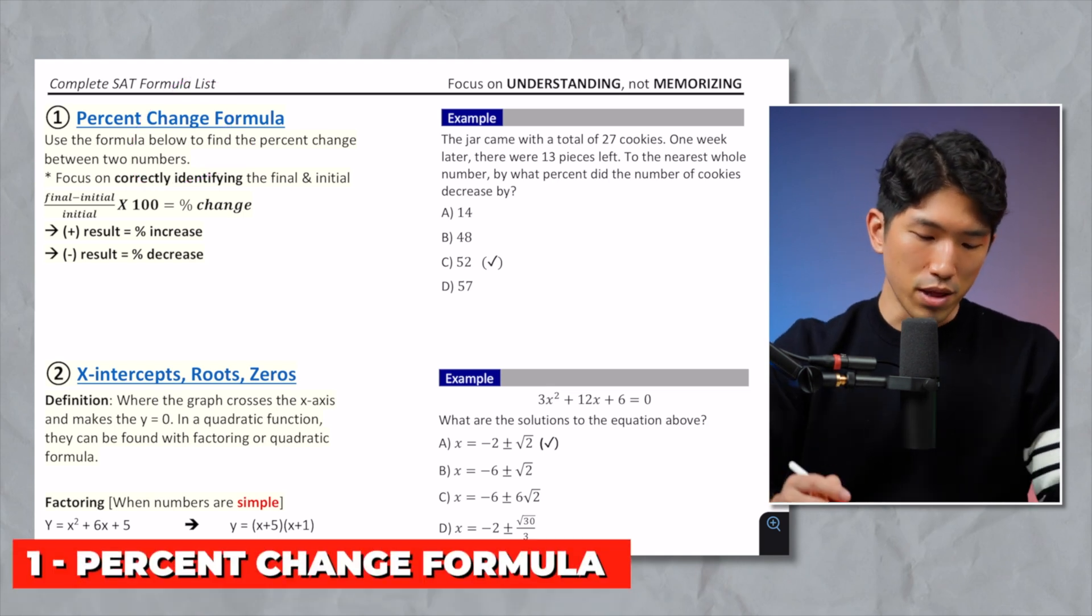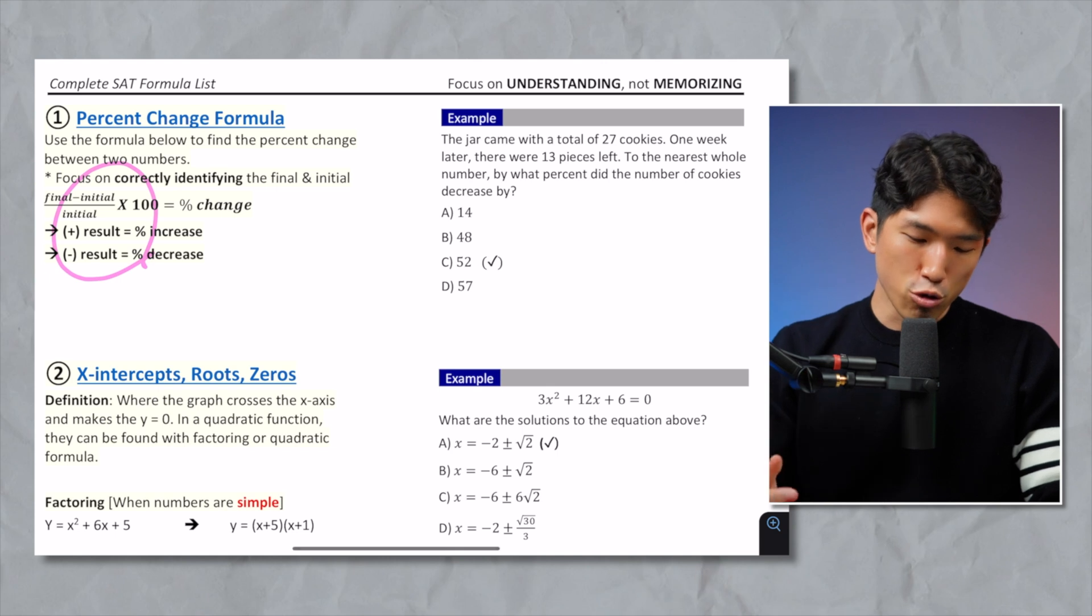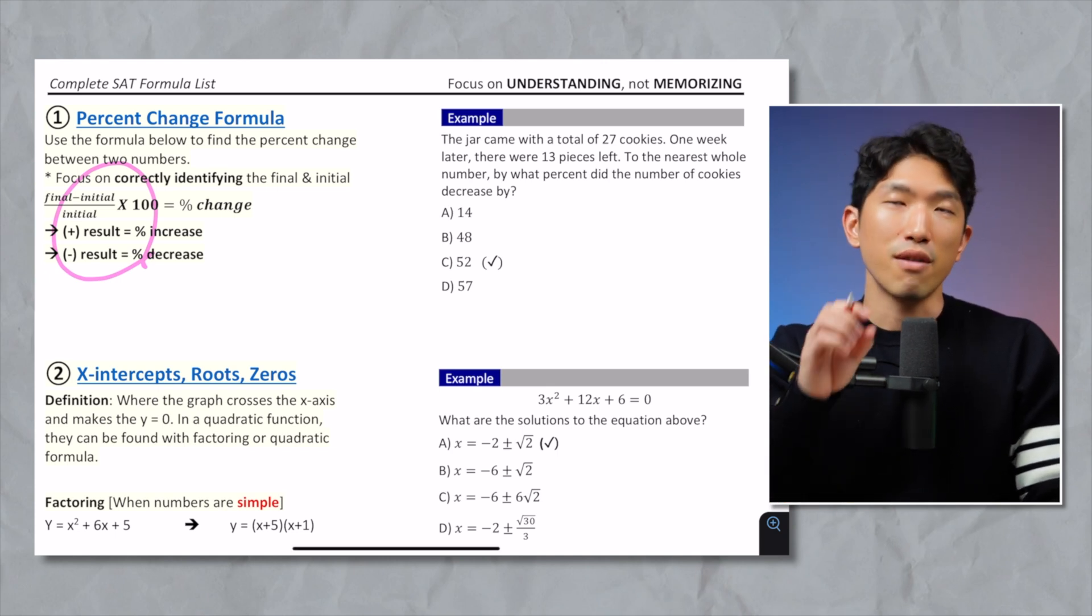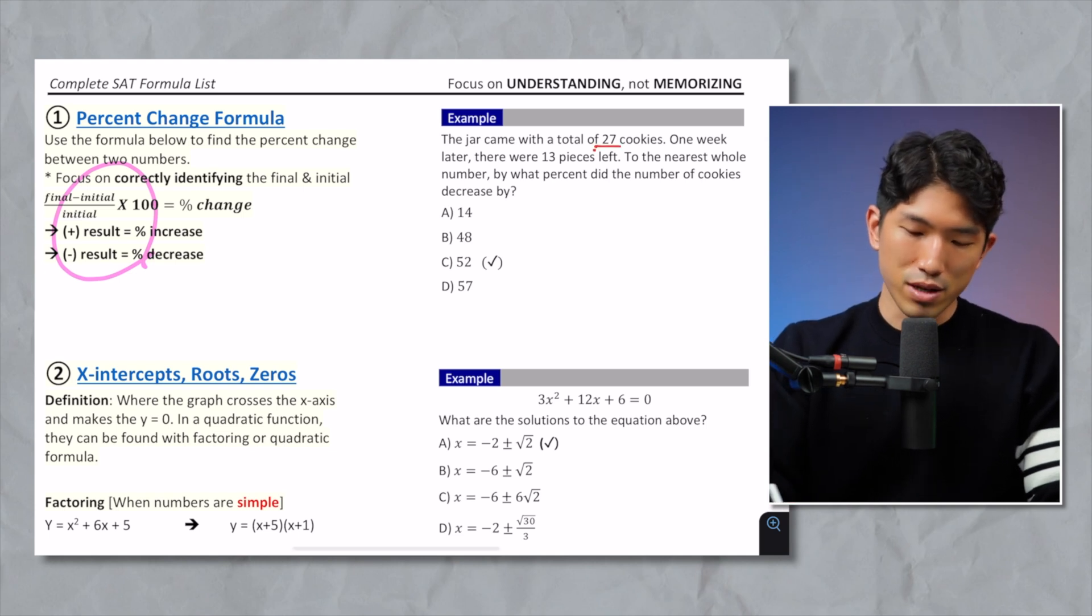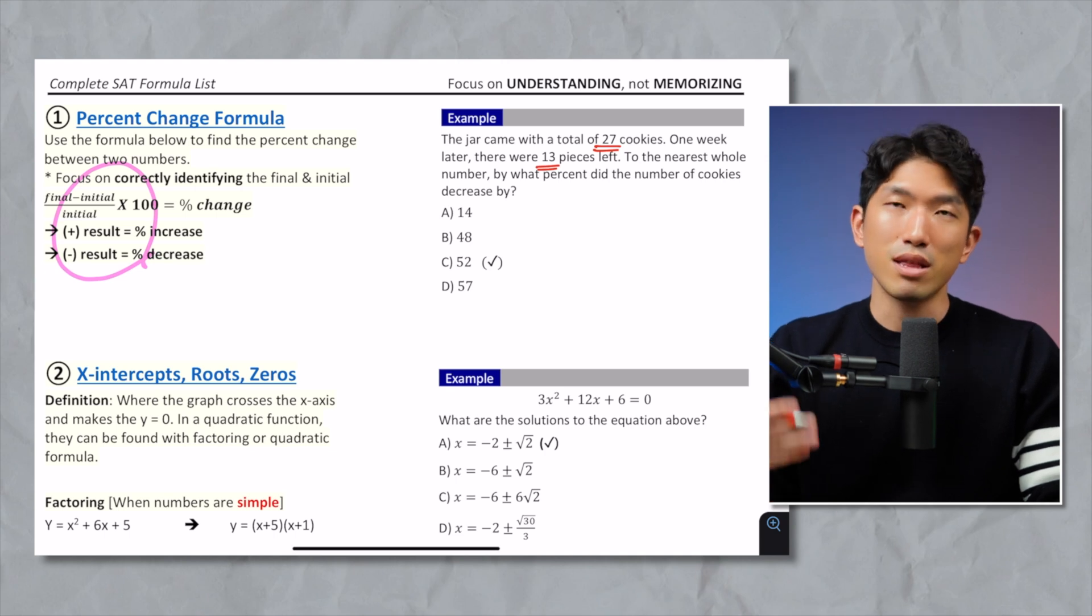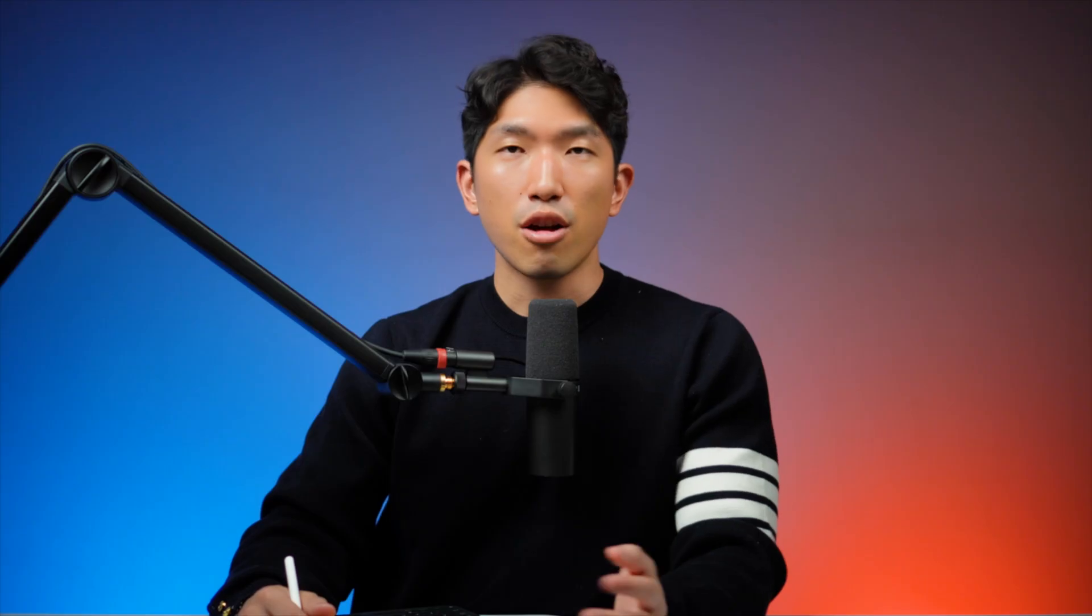So first one is going to be the percent change formula, which is used to find the percent increase or decrease from one number to the next. And the formula is going to be final minus initial over initial times 100, and the result is going to show you the percent change. If it's positive, increase; negative, decrease. And how does it look? You have seen this question before. You have 27 cookies, and you're left with 13 pieces. What was the percent decrease? Well, it went from 27 to 13. So final minus initial over initial times 100 could transfer that way. And on top of the percent change formula, guys, you want to understand how to use the equation method because with the SATs trend nowadays, it seems like they're moving towards the equation method based questions. So have the percent change formula and also have the equation method in the back pocket. That way you'll be 100% prepared, ready to go.